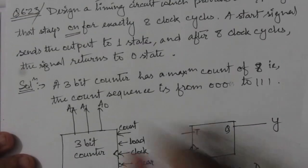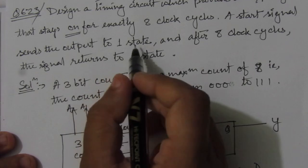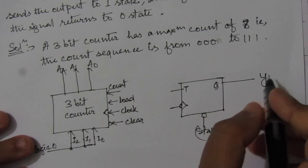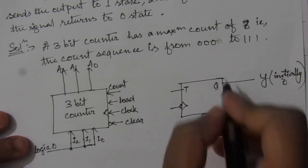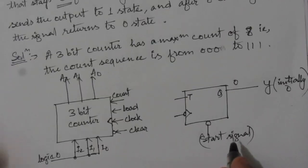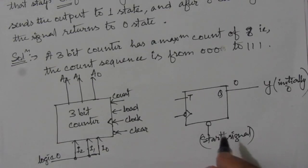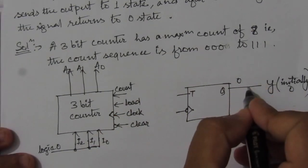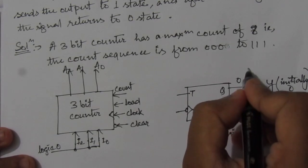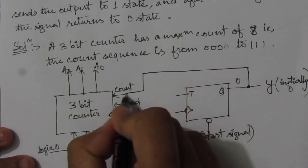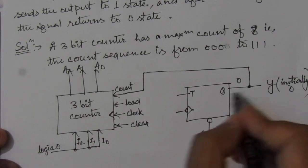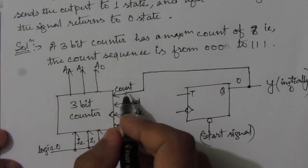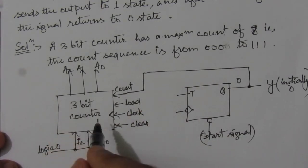According to the question, this output of the flip-flop will change to the 1 state. Initially the output is 0, so whenever we have a start signal, this output will change from 0 to 1. We will feed back this output of the T flip-flop to the count input of the counter. Whenever we have 1 at this output, it is fed back to the count input, and whenever count equals 1, the counter will start counting.